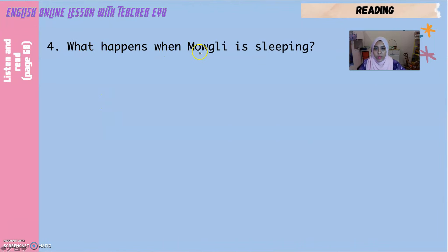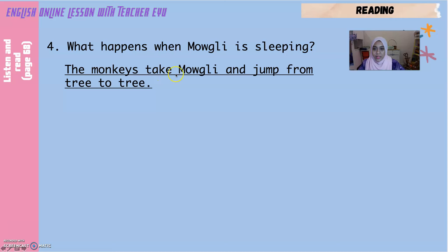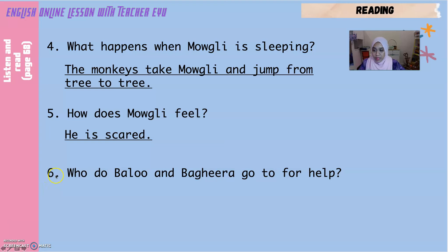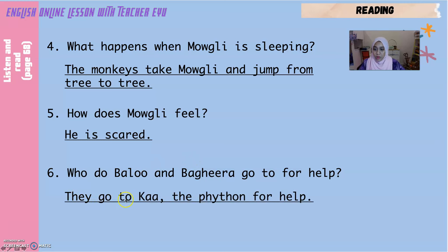Question number four: what happens when Mowgli is sleeping? The monkeys take Mowgli and jump from tree to tree — this happens when they were sleeping. Number five: how does Mowgli feel? He is scared — Mowgli rasa takut. Lastly, number six: who do Baloo and Bagheera go to for help? They go to Kaa the python for help — mereka cari Kaa the python untuk dapatkan pertolongan.